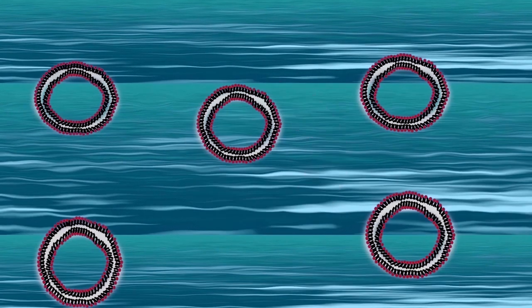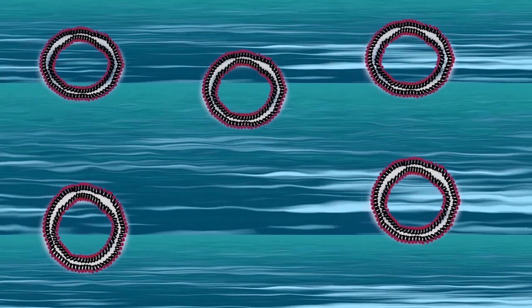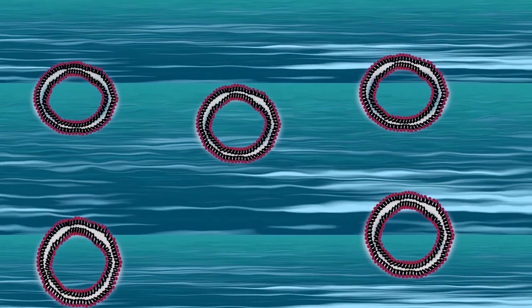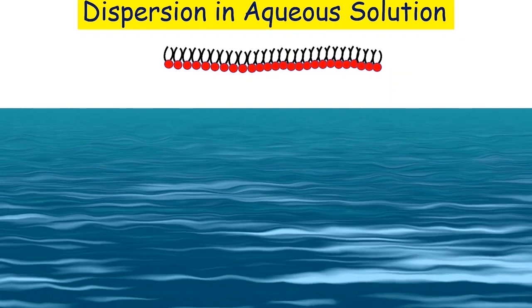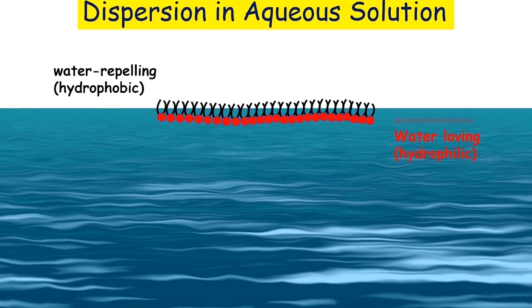The formation of liposomes begins with a delicate dance of lipid molecules in an aqueous solution. These lipid molecules, typically phospholipids, are amphipathic, which means they have hydrophilic heads and hydrophobic tails. When these lipid molecules are dispersed in an aqueous solution, something remarkable happens. The hydrophilic heads interact with water molecules while the hydrophobic tails shy away from water, seeking refuge amongst themselves.